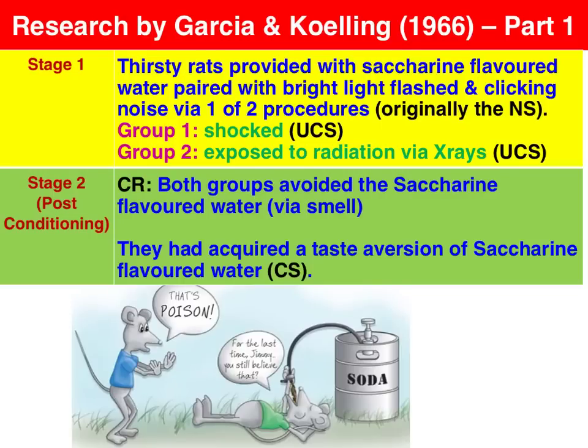Garcia conducted a two-part experiment on the development of taste aversion for rats. In the first part, thirsty rats were provided with saccharine-flavored water, paired with a bright light and a clicking noise, which was originally the neutral stimulus.